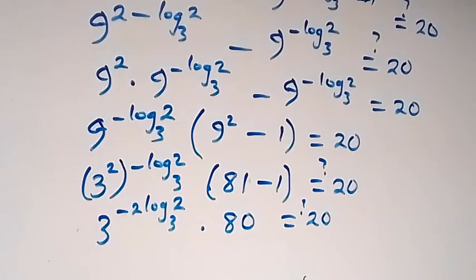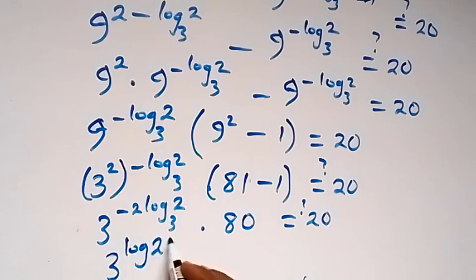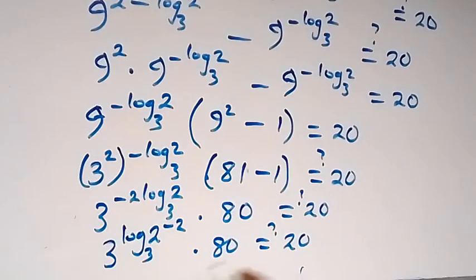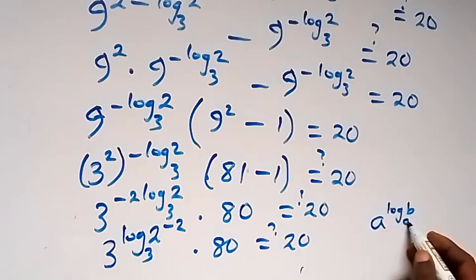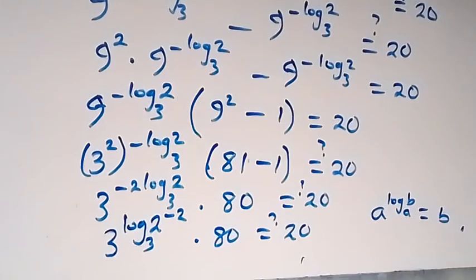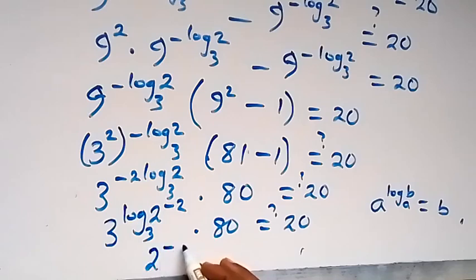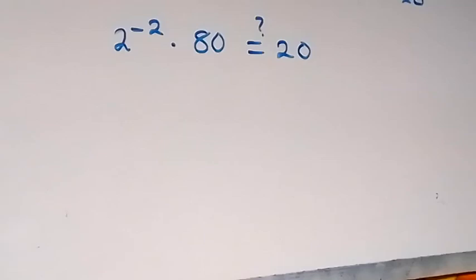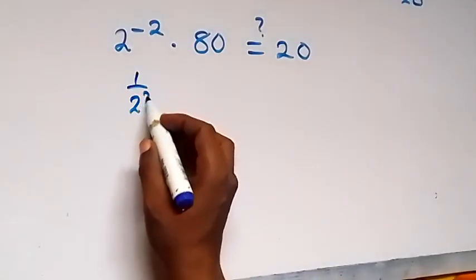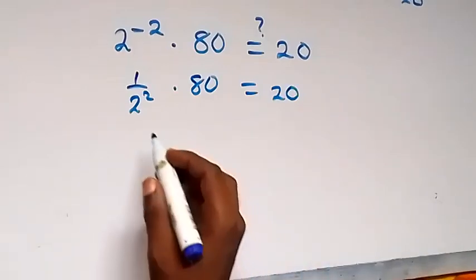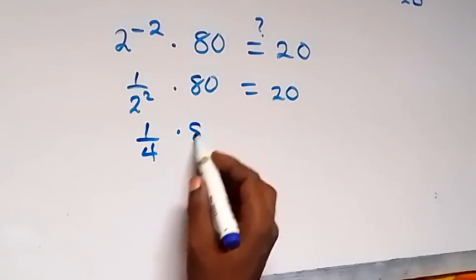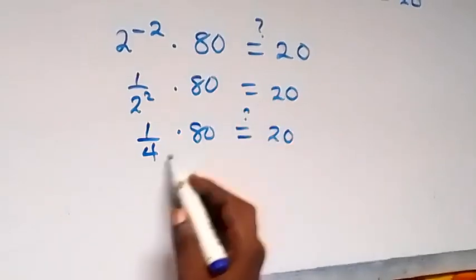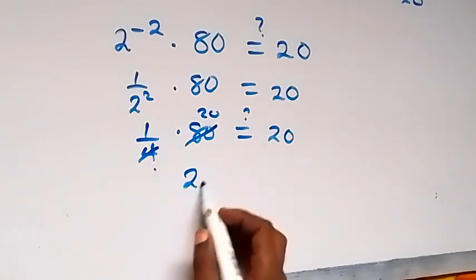Then, 2 raised to the power minus 2 is the same as 1 over 2 squared, times 80. This is 1 over 4, times 80, equals 20. And 80 over 4 is 20, so 20 equals 20.